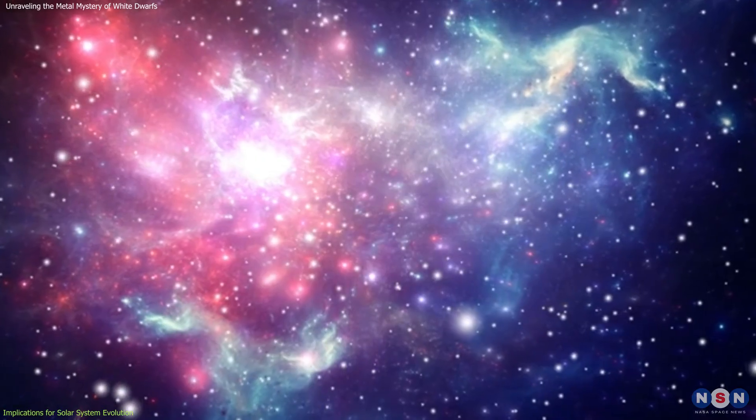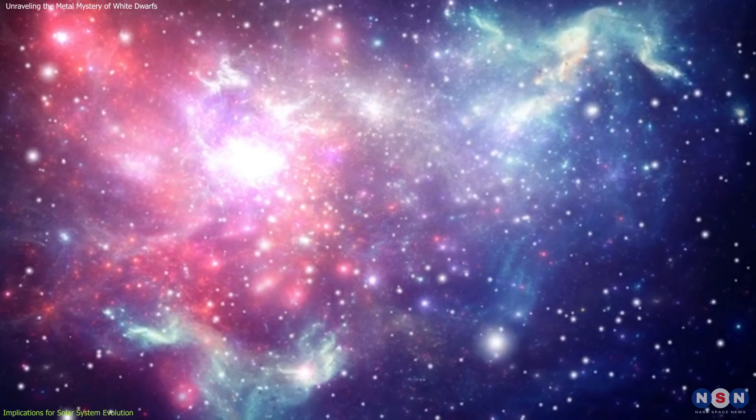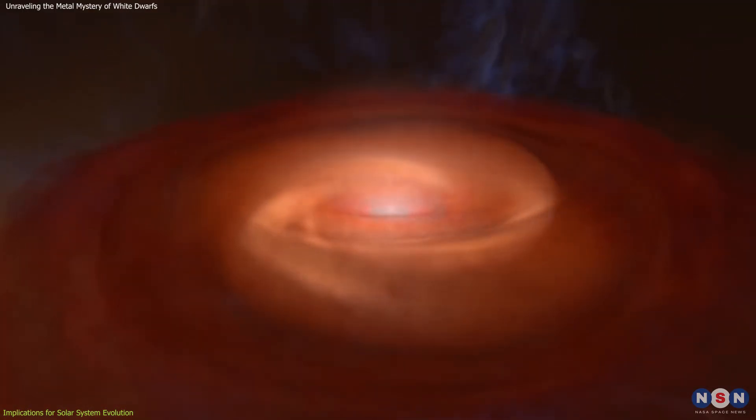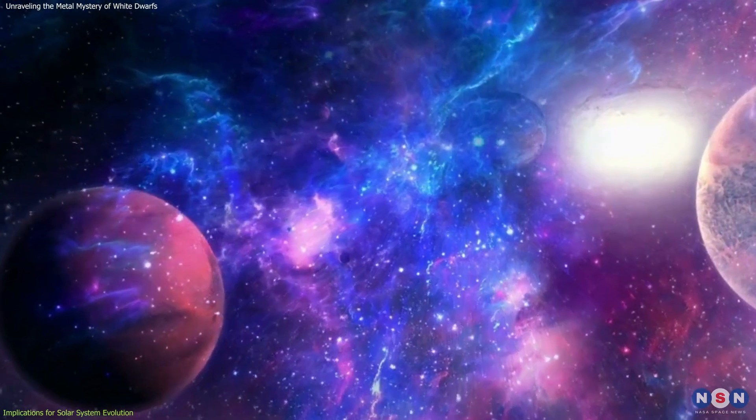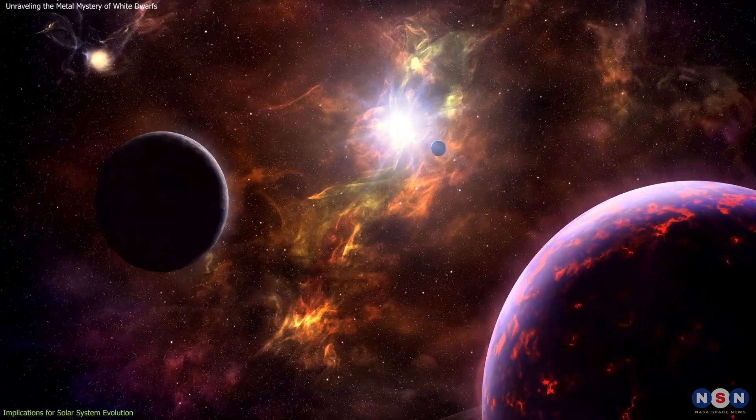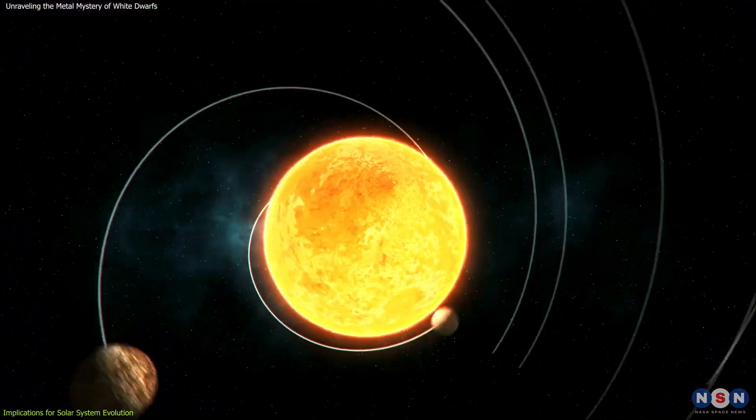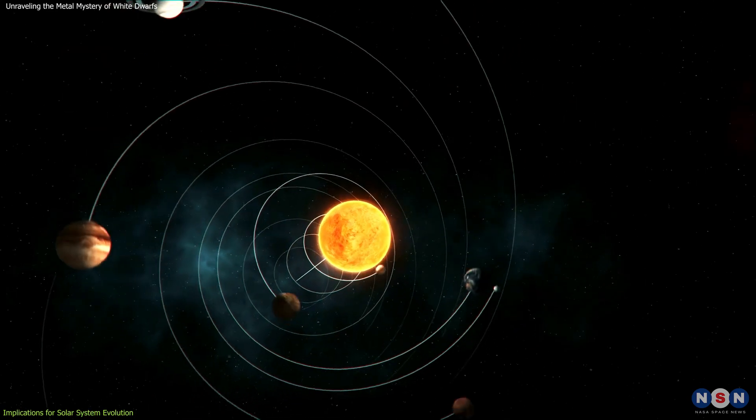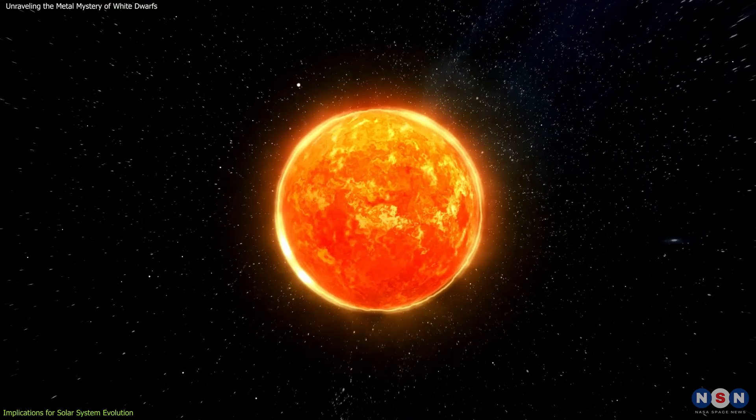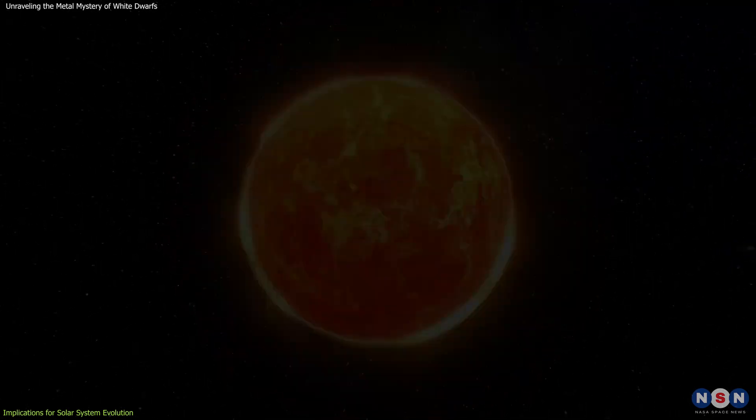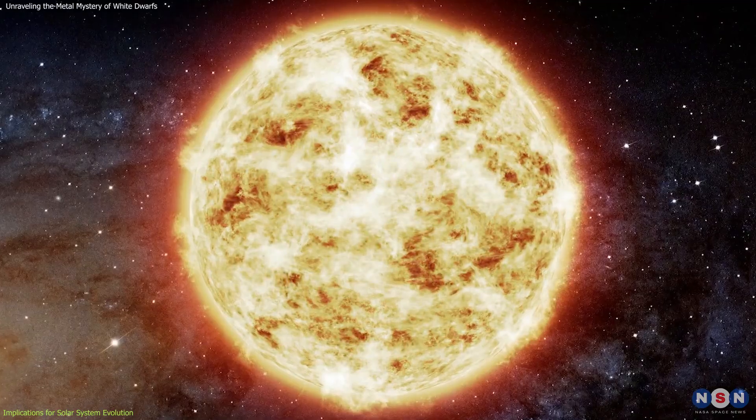contributing to the cosmic reservoir of heavy elements. These elements are crucial for the formation of new planets, and by extension, for the possibility of life. Understanding the fate of planetary systems around white dwarfs also provides us with a stark vision of the distant future of our own solar system. Astronomers predict that in about 5 billion years, our sun will exhaust its nuclear fuel and transition into a red giant...